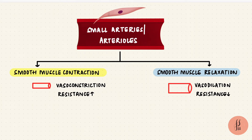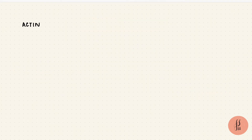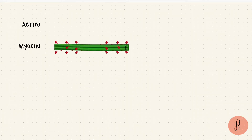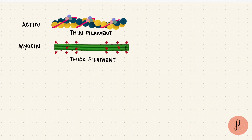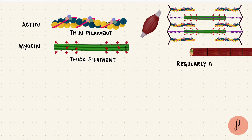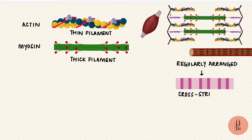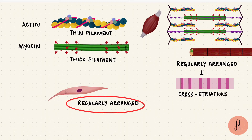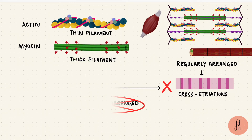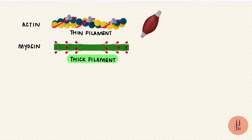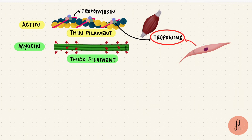Just like skeletal muscles, smooth muscles contract and relax, and to do that they also use actin and myosin — those thick and thin filaments. In skeletal muscles, these filaments are regularly arranged, which is what creates the cross-striations, while in smooth muscles they're not so regularly arranged, which is why there aren't any striations. In skeletal muscle, the thick filaments have myosin, and the thin filaments have actin, tropomyosin, and troponins. But smooth muscles do not have troponin.